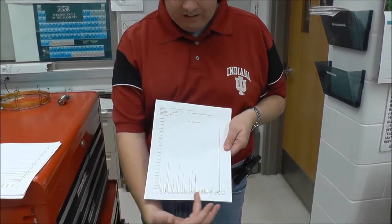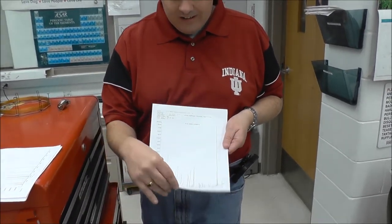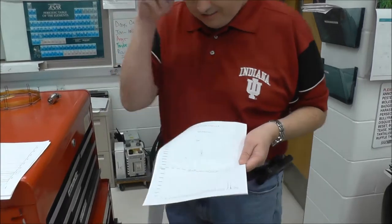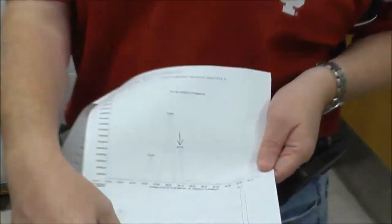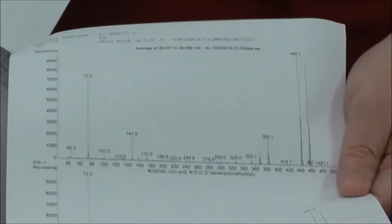So again, GCMS, there's our whole list of all the different metabolites. Blow up around 26 minutes. There we go. That corresponds to uric acid. You might show here the structure of uric acid.